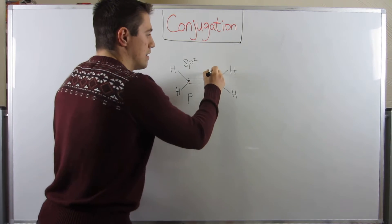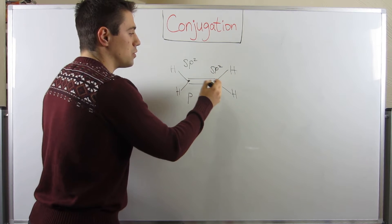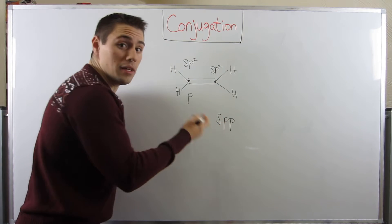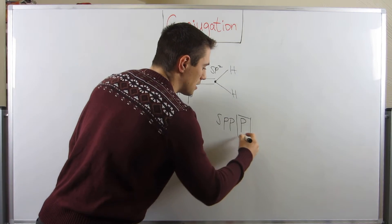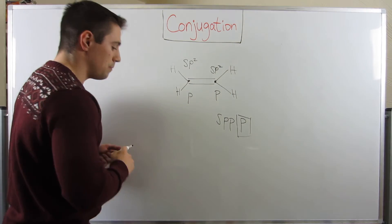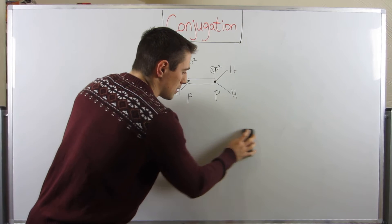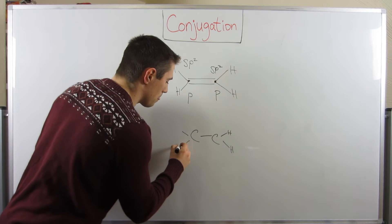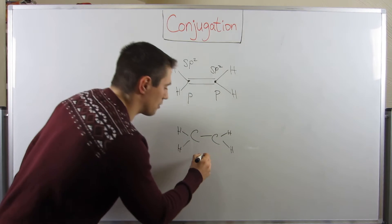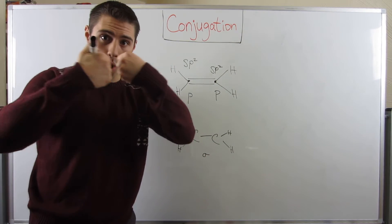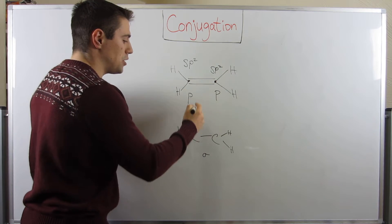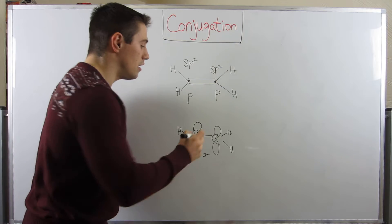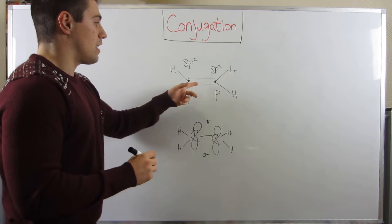Same deal on the other carbon — it's also SP2 hybridized because it has three bonding areas. We use S, P, P, and we know we have three P subshells, so it also has an unhybridized P orbital. Drawing a little molecular diagram: the carbon is bonded to two hydrogens, and in this double bond there's a sigma bond — the head-to-head overlap between the two carbons. The unhybridized P orbital gives us two P orbitals parallel to each other, and that makes up the pi bond in this double bond.